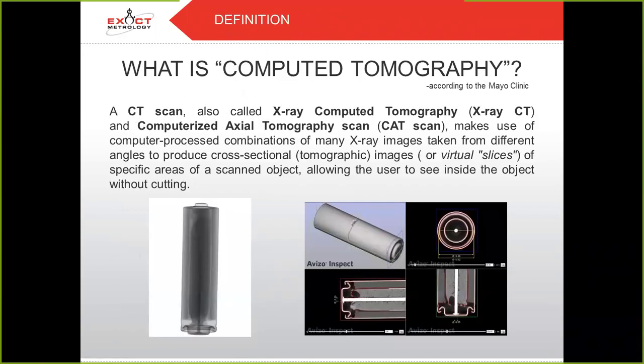What is computed tomography? A CT scan, also called X-ray computed tomography or computerized axial tomography scan (CAT scan), makes use of computer-processed combinations of many X-ray images taken from different angles to produce cross-sectional or tomographic images — virtual slices — of specific areas of a scanned object, allowing the user to see inside the object without cutting.